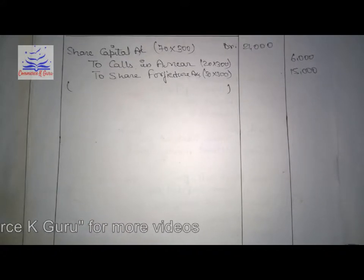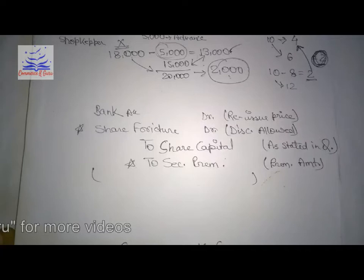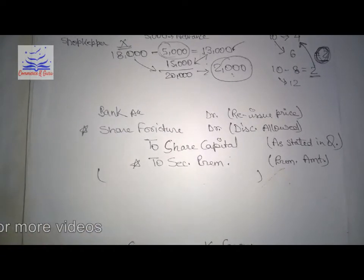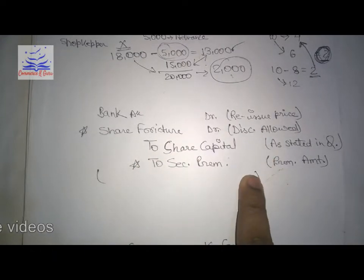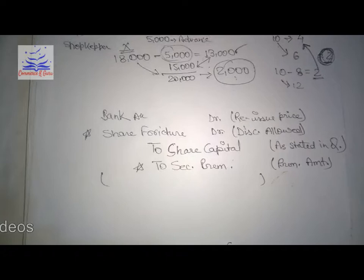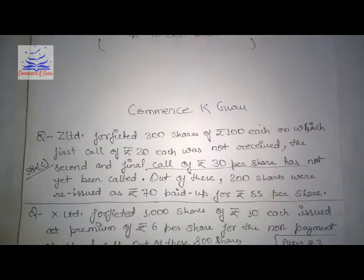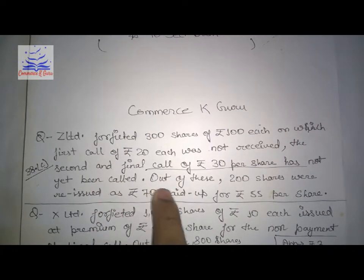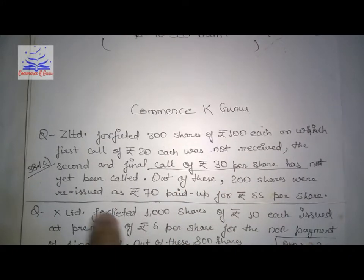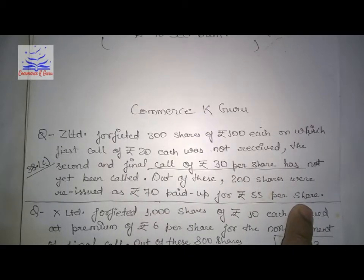Now let's talk about reissue. Looking at the reissue entry, we have: Bank debit, Share Forfeiture debit, to Share Capital, to Security Premium. Now for the reissue question: 200 shares were reissued as ₹70 paid-up for ₹55 per share.